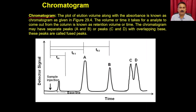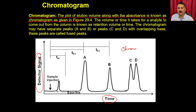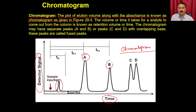The plot of elution volume along with the absorbance is known as the chromatogram. If you plot the detection signal against time, the resulting pattern is the chromatogram, which tells you when the sample was injected and when each protein eluted. Based on this, you can assess how well the column is separating different peaks.